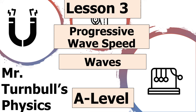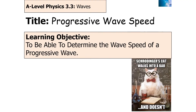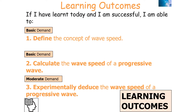Hello and welcome to the following lesson on progressive wave speed, which is part of the AQA A-level physics topic of waves. In today's lesson, we're going to try to determine the wave speed of a progressive wave. If we've been successful, we should be able to define the concept of wave speed, calculate the wave speed of a progressive wave, and experiment and deduce the wave speed of a progressive wave.